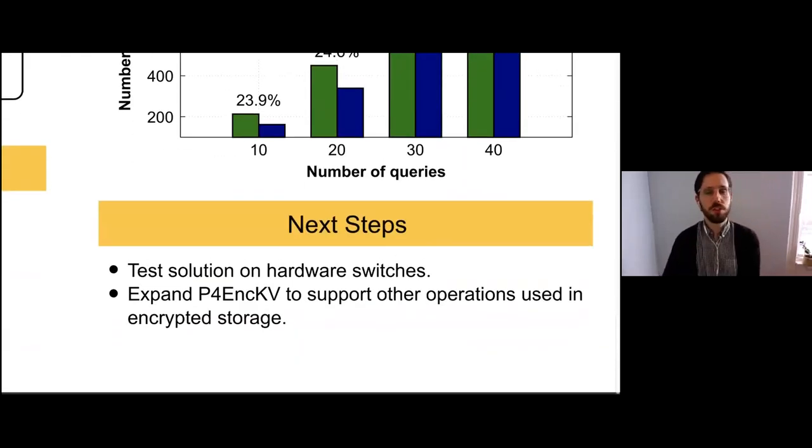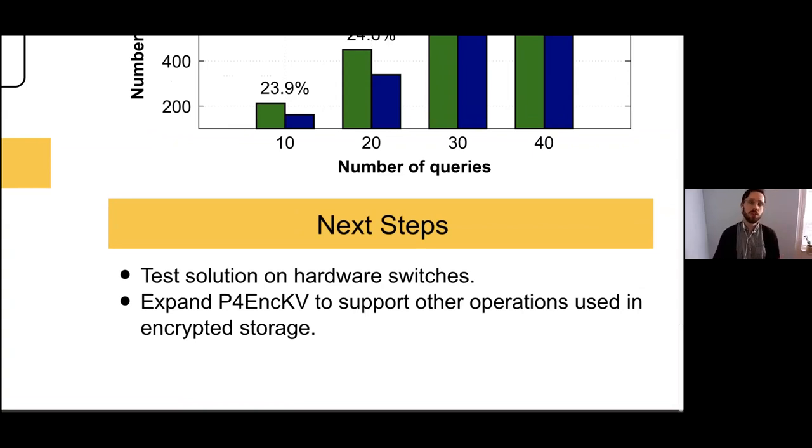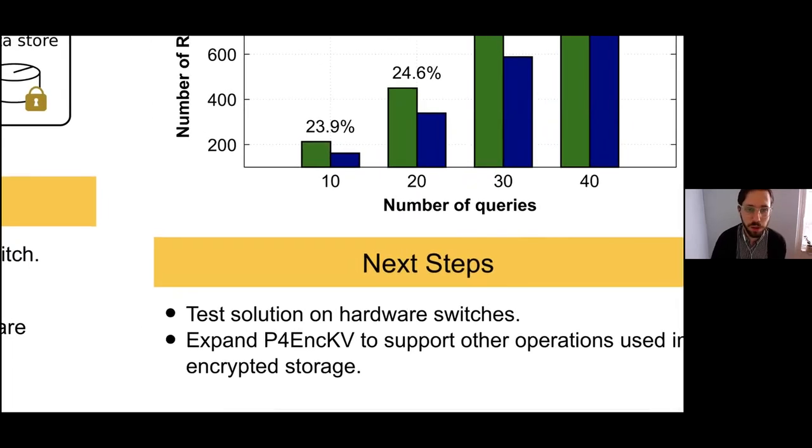Our next steps for this system is to move the solution from a Mininet simulator to a hardware switch. Doing this, we can get a better idea of the latency improvements we're going to get. Also we want to move beyond just caching. There's a lot of operations that are handled by these proxies that could potentially be moved to the network. More recently, we've been looking at doing some frequency smoothing along with caching to protect against frequency analysis and attacks that way.